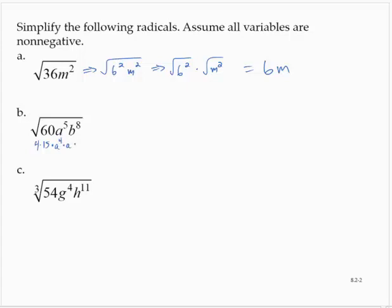And b to the eighth — well, that's a perfect square as well. So what I'm going to do is take the perfect square factors and separate them from the non-perfect square factors. So I would rewrite this as the square root of 4 times a to the fourth times b to the eighth, times the square root of 15a.